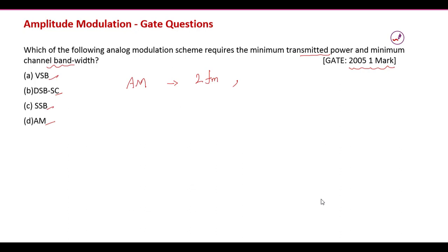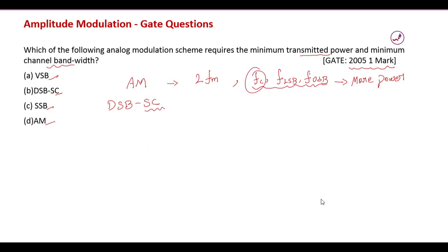Conventional AM has three components: the carrier frequency, the lower sideband (LSB), and the upper sideband (USB), so all three consume power. For DSBSC, the carrier is suppressed, and the required bandwidth is still 2F_M because two sidebands remain, but the power is somewhat reduced compared to conventional AM.